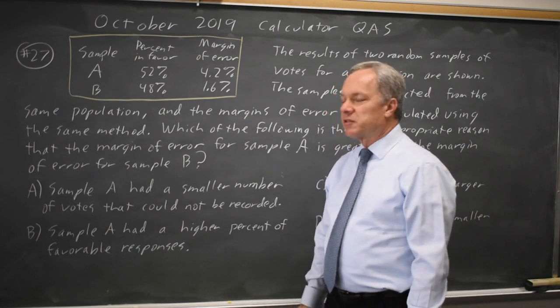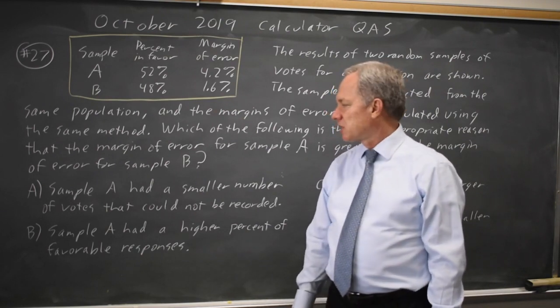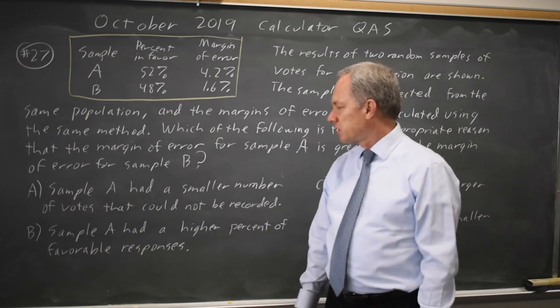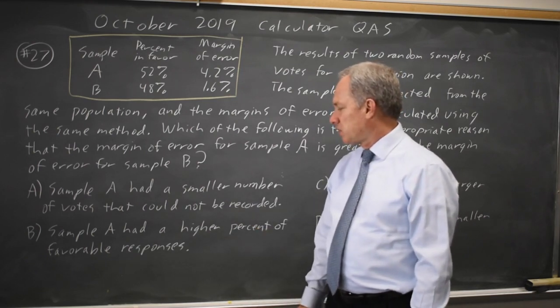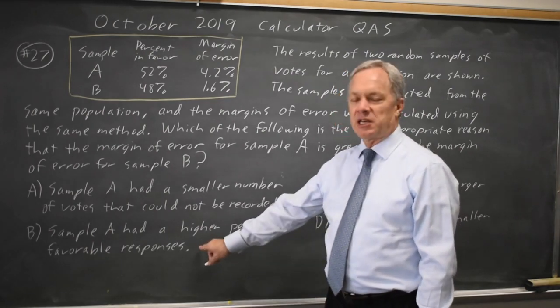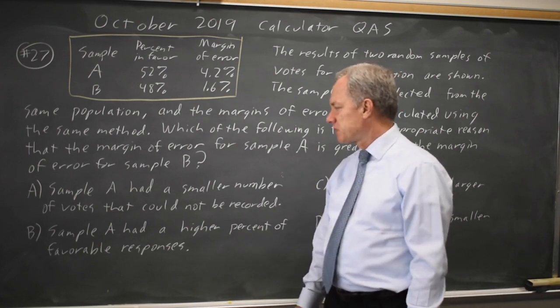Typically, margin of error is determined by sample size, not by the number of votes that could not be recorded, not by the percent of favorable responses, or it's only very slightly sensitive to the percent of favorable responses.